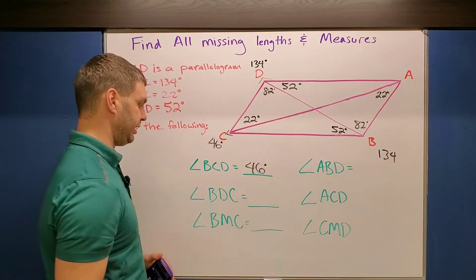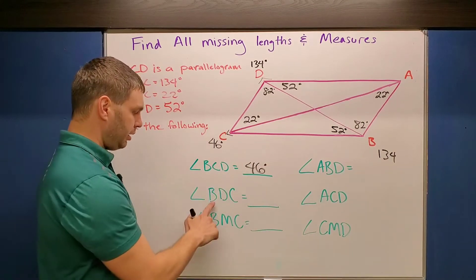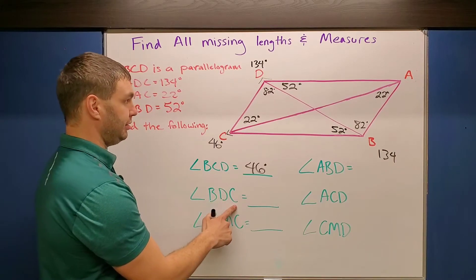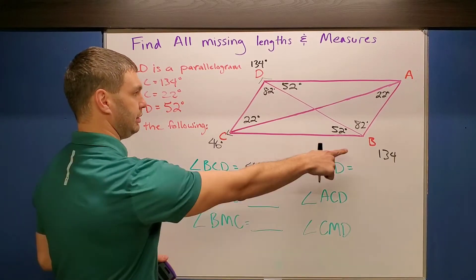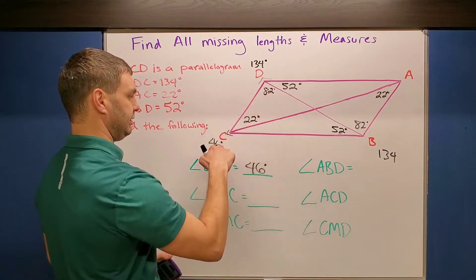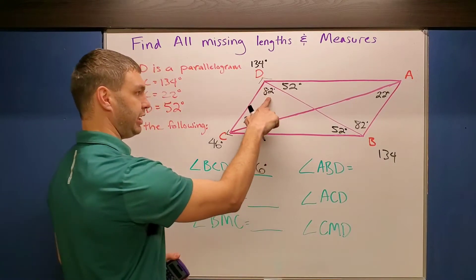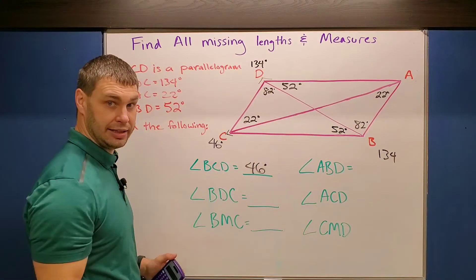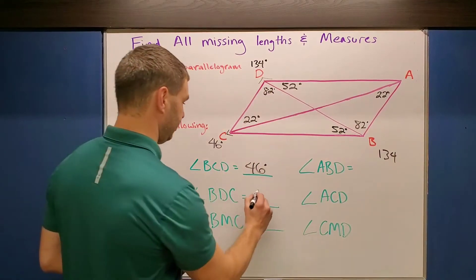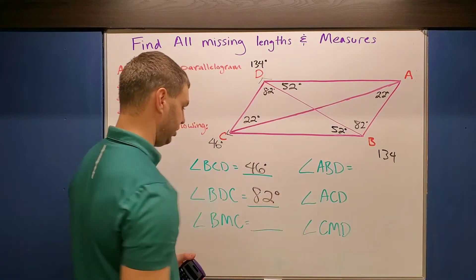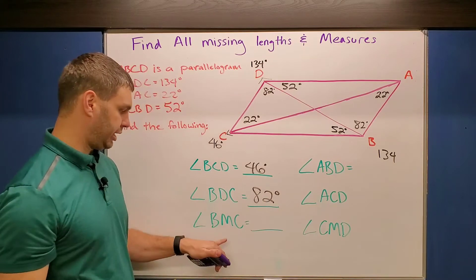What else do I need to find? BDC. BDC is this angle. Well, I already found it — that's 82 degrees. Nice, no work required for that one.